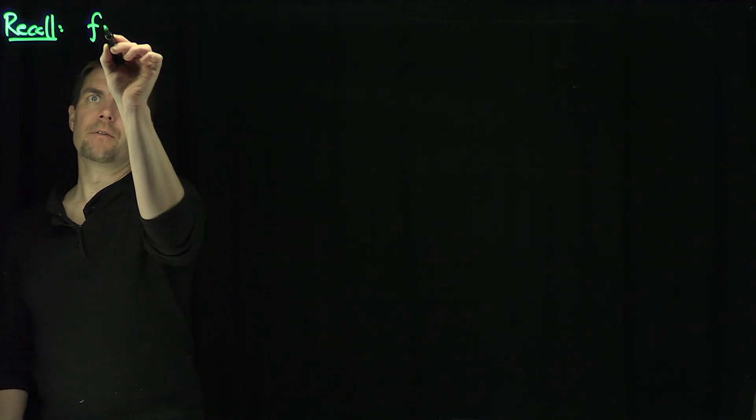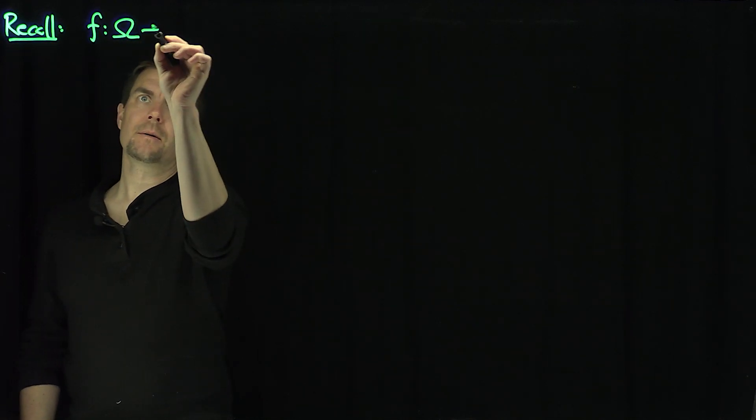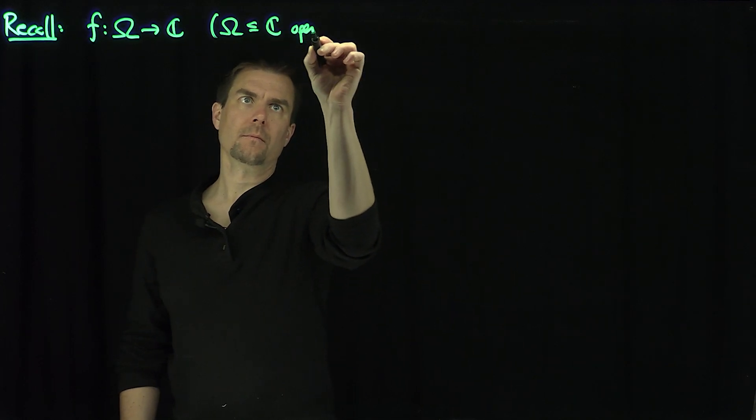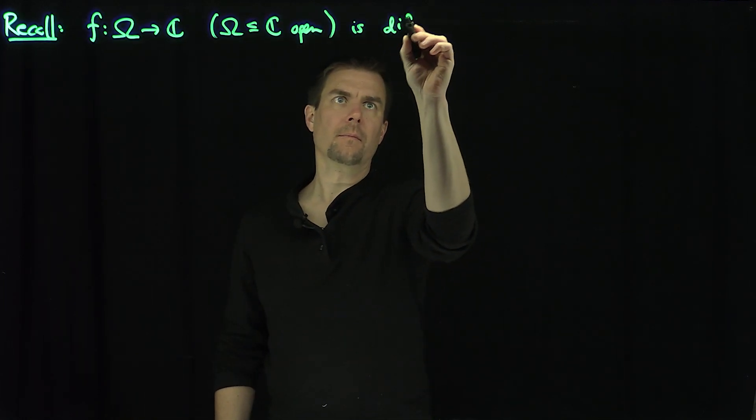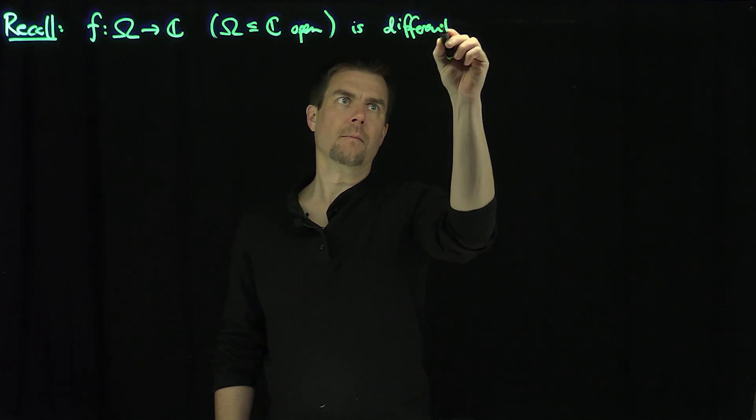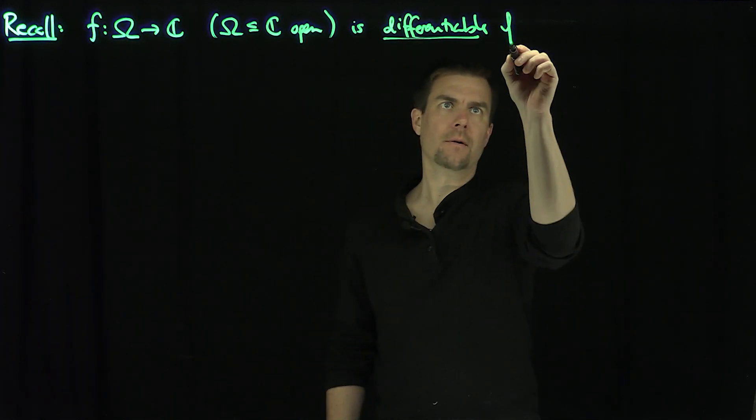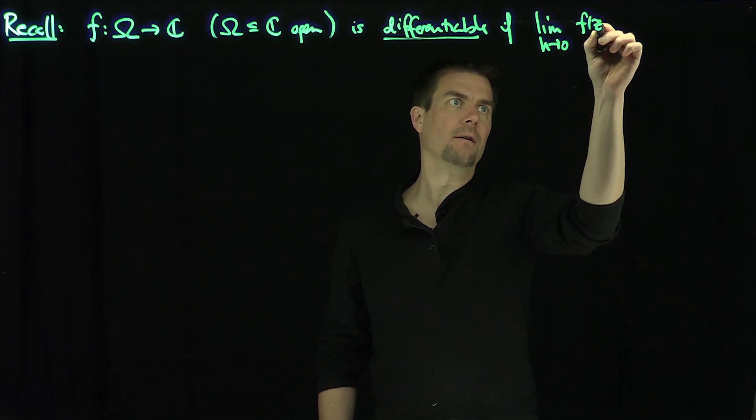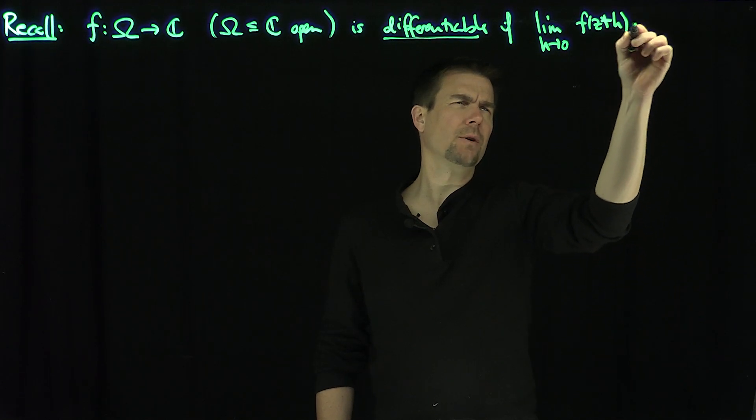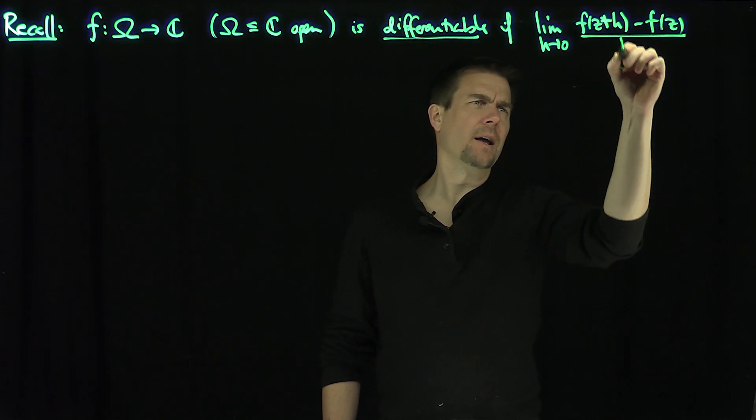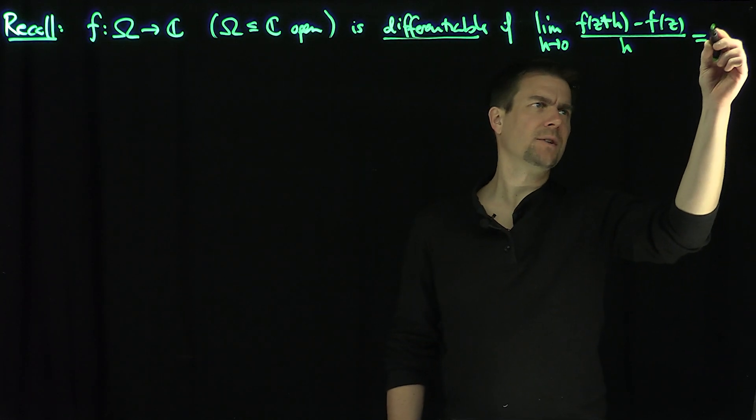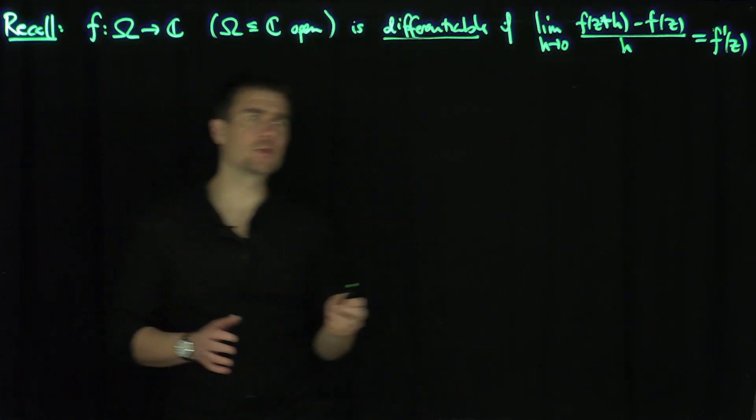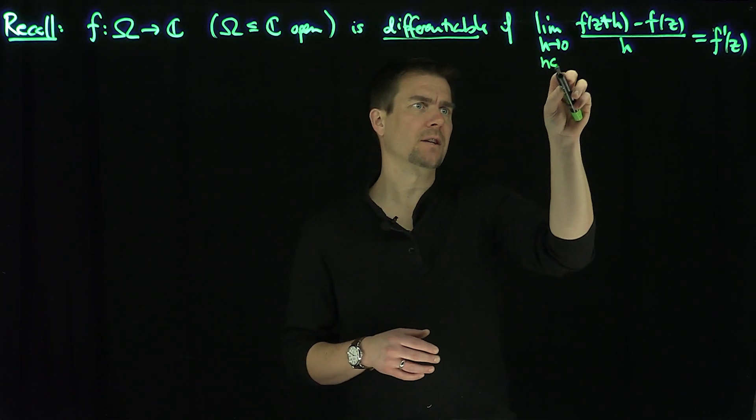Recall that if f is a mapping of an open subset of the complex plane into C, omega ⊂ C open, it's differentiable if the limit as h goes to 0 of (f(z+h) - f(z))/h exists and equals f'(z). This gives rise to complex differentiability at z.